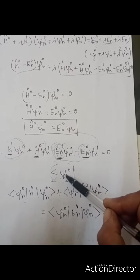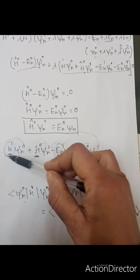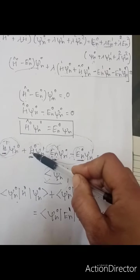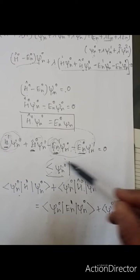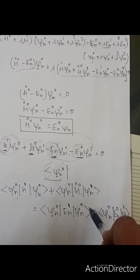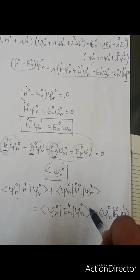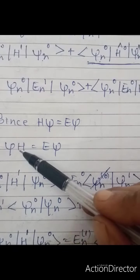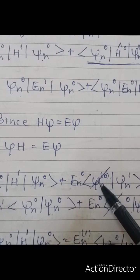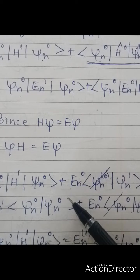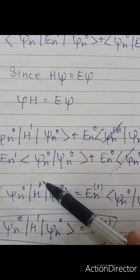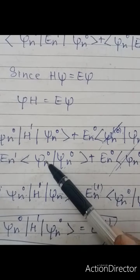After cancellation, we are left with only two terms: ⟨ψₙ⁰|H′|ψₙ⁰⟩ = Eₙ¹⟨ψₙ⁰|ψₙ⁰⟩. Applying the normalization condition — since the wave functions are normalized, integrating ψ* ψ dτ equals 1, meaning ⟨ψₙ⁰|ψₙ⁰⟩ = 1 — we obtain the equation for the first-order energy correction: Eₙ¹ = ⟨ψₙ⁰|H′|ψₙ⁰⟩. This is the expression for the first-order perturbation correction to the energy.